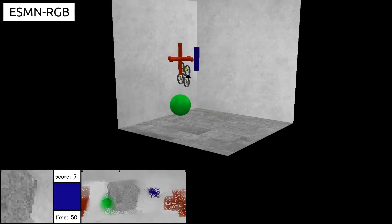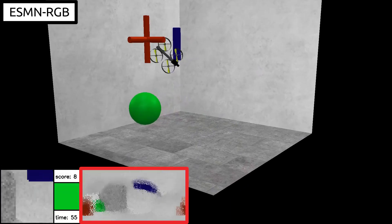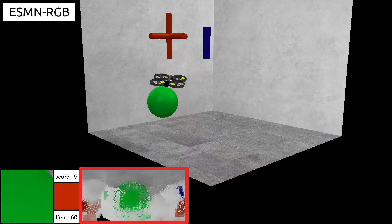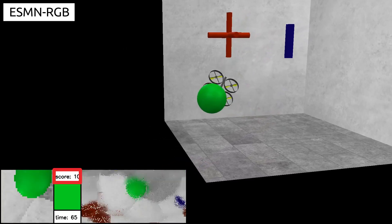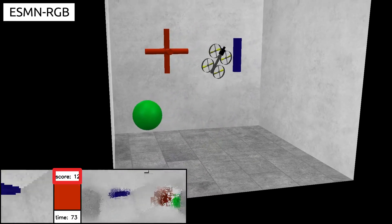Here we show the ESMN RGB agent, with the memory images at the bottom. This ESM agent doubles the score of the LSTM baseline on average, performing the task almost optimally.